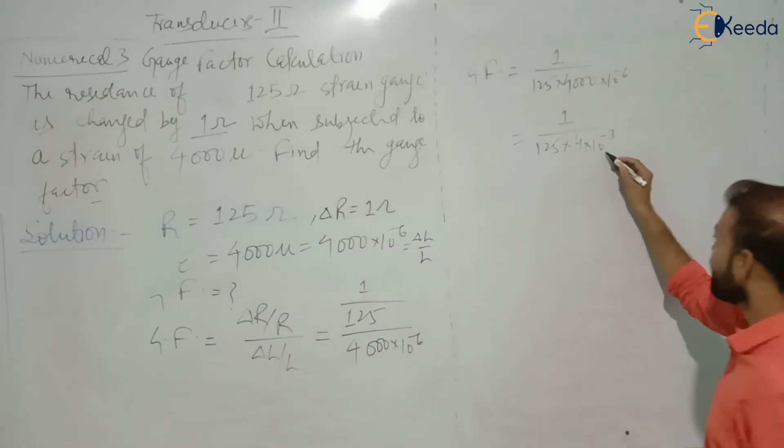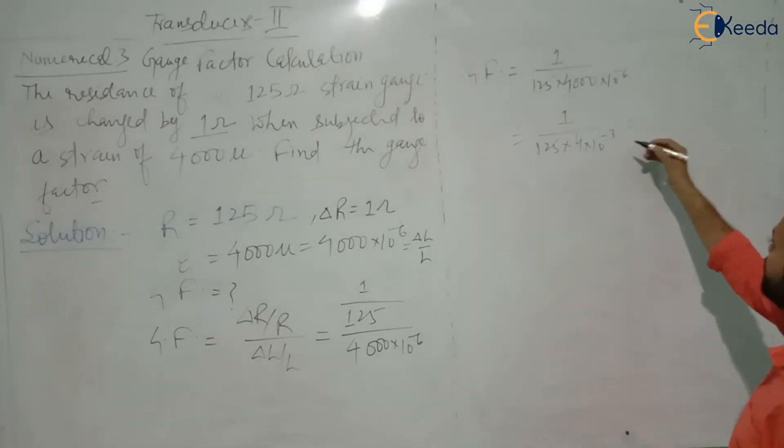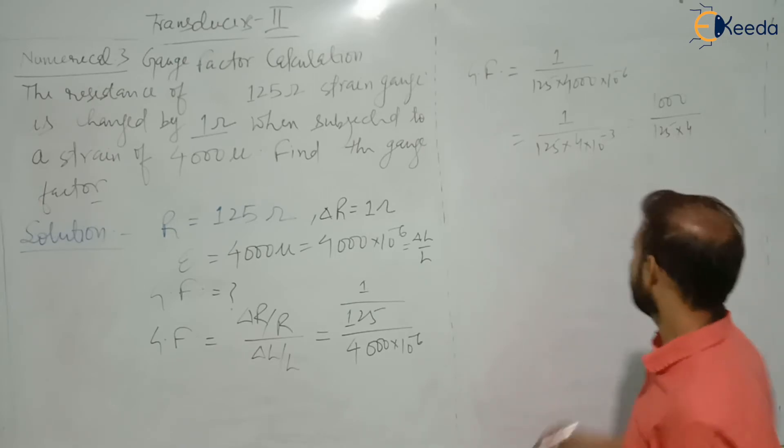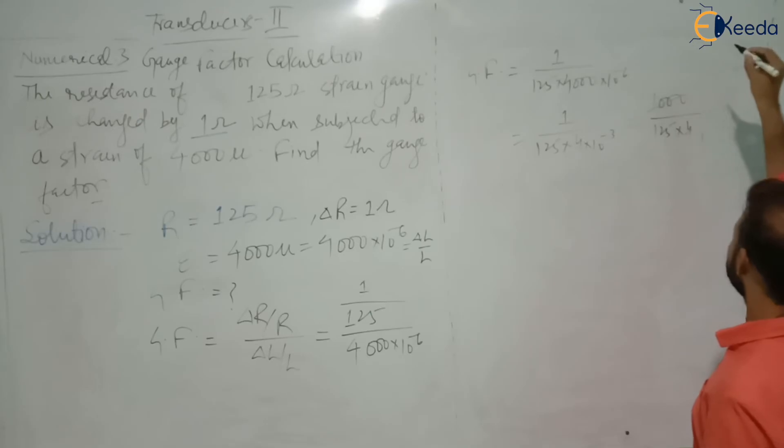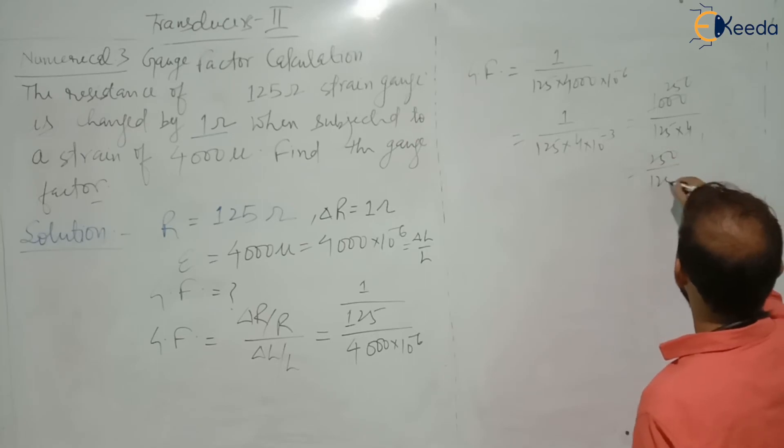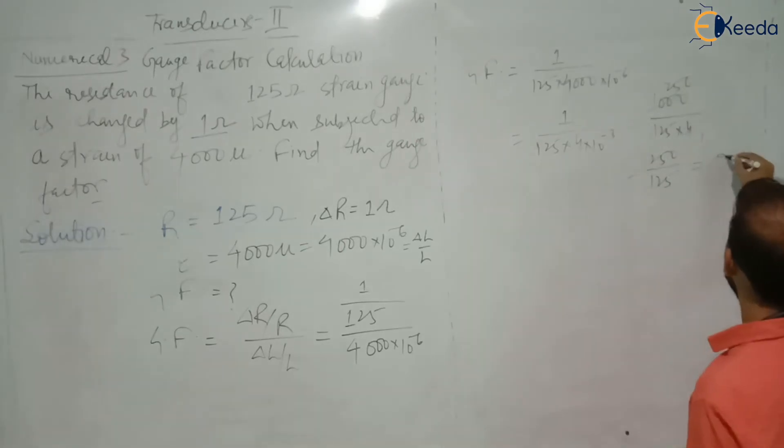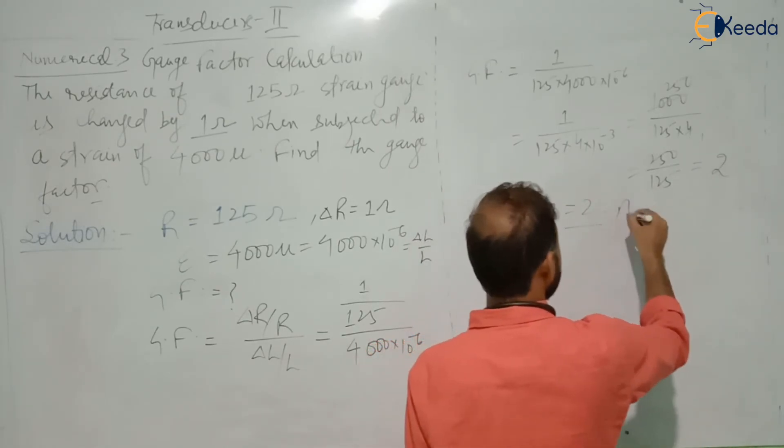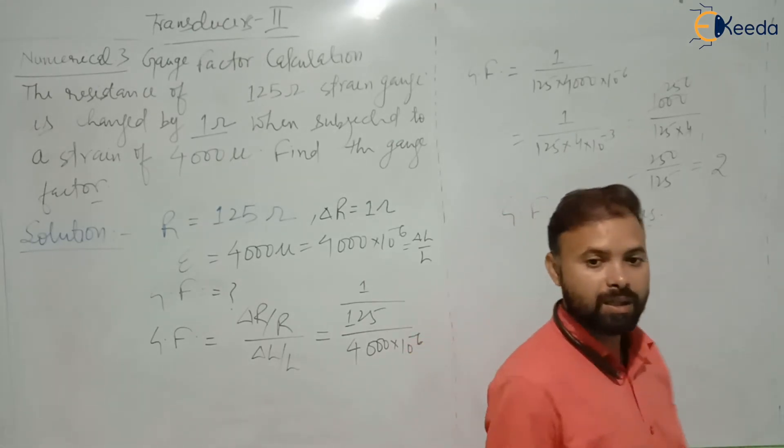Let's move this 10 to the power minus 3 in the numerator. So it will be 10 to the power minus 3 which is nothing but 1000 divided by 125 into 4. 4 and 1000 will be cancelled out and value in the numerator will be 250. So 250 divided by 125 it will be equal to, from here gauge factor is 2. This is your answer. Answer is 2.